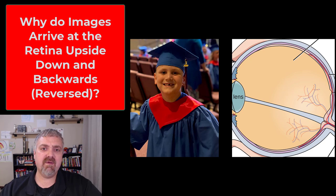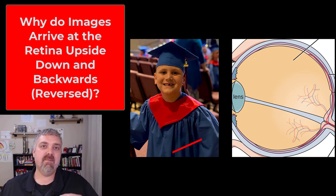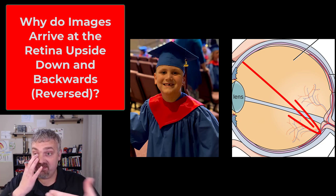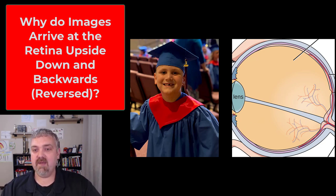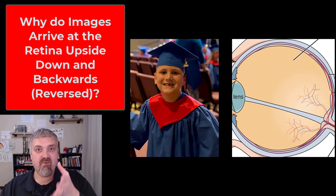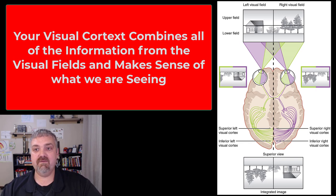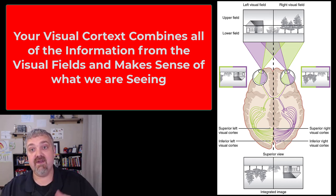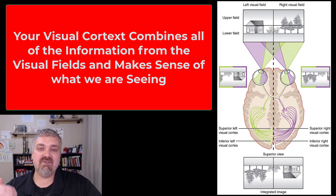Images show up reversed — upside down and backwards — at the retina. Light from the top of an image hits the bottom of the retina; light from the bottom of an image hits the top. Light from the left side hits the right side of the retina, and light from the right side hits the left side. So at the retina, an image like Oliver at his kindergarten graduation would appear upside down and backwards. Your brain takes all that information from both eyes, figures out what's coming from the left and right visual fields, flips it back around, and integrates it into the normal picture we see.